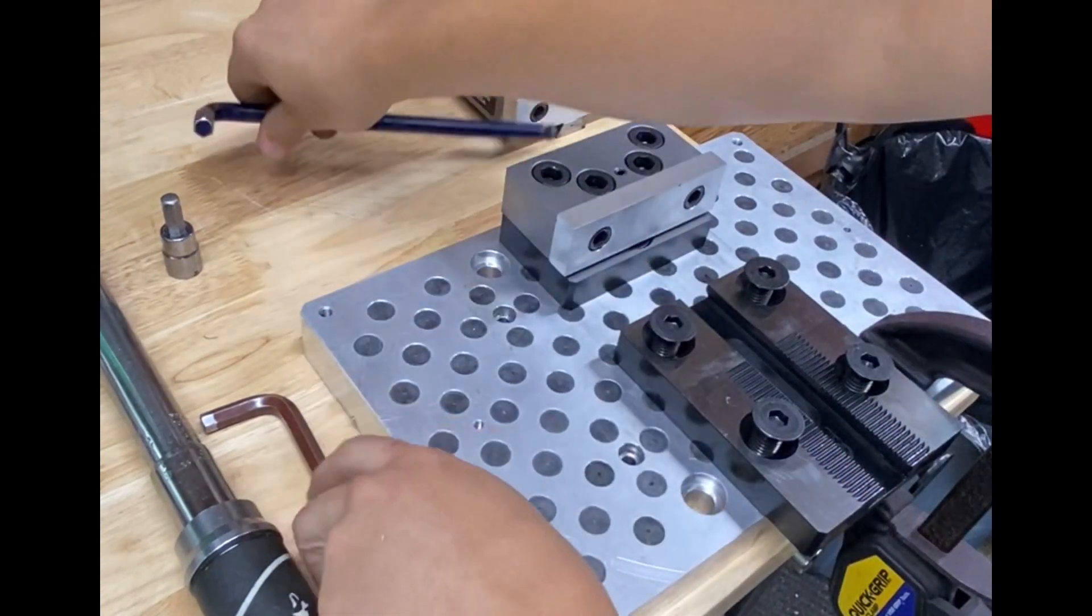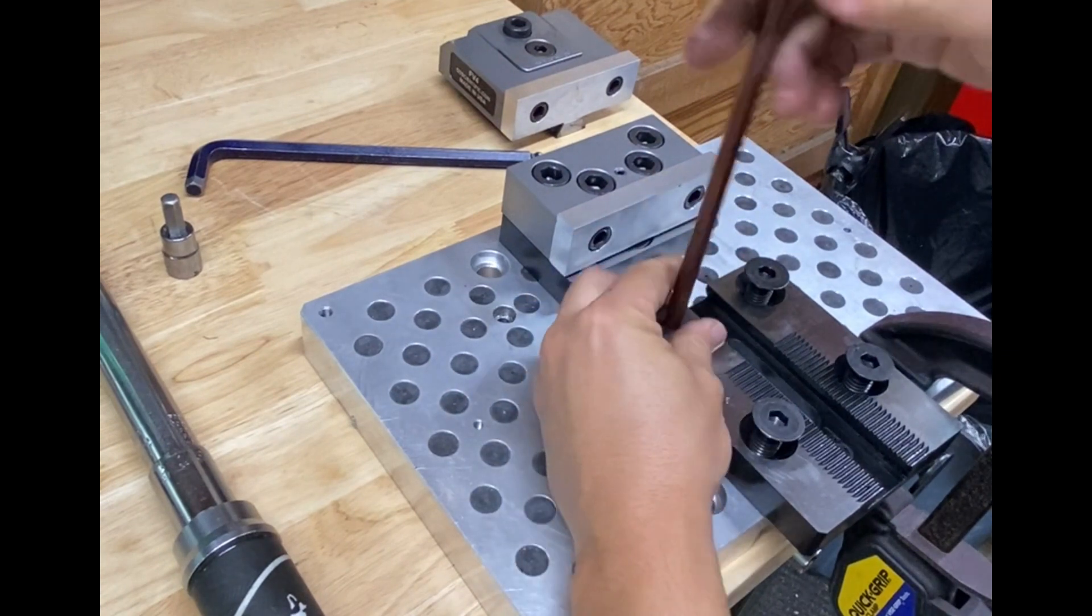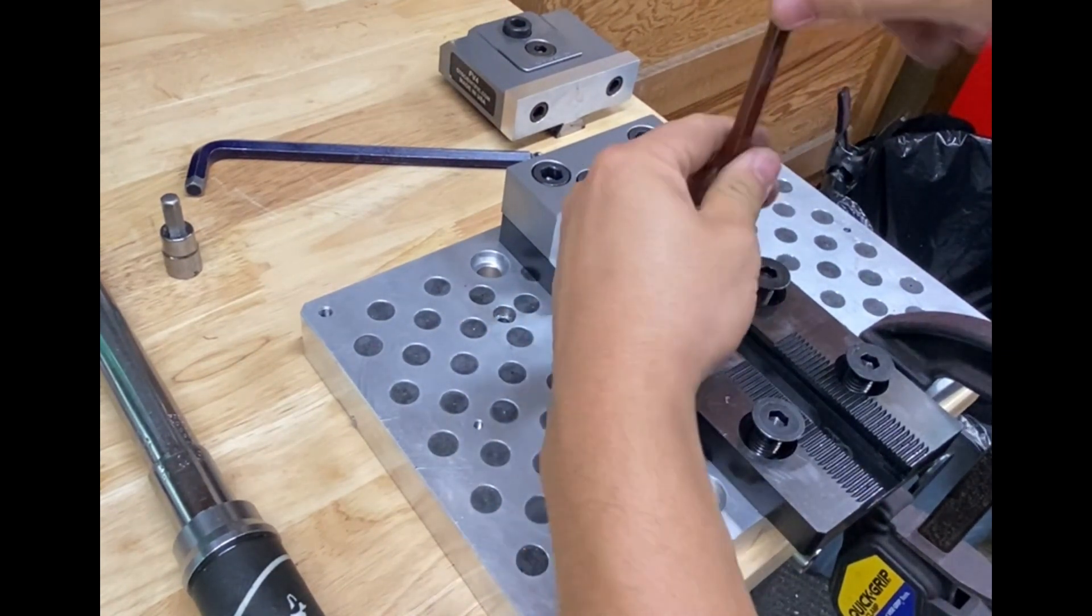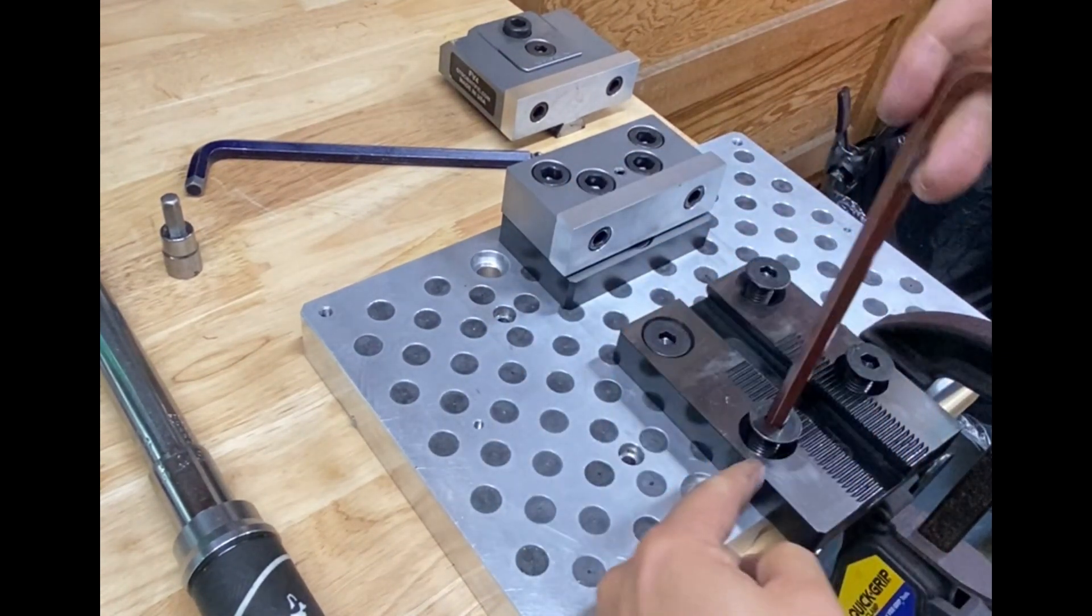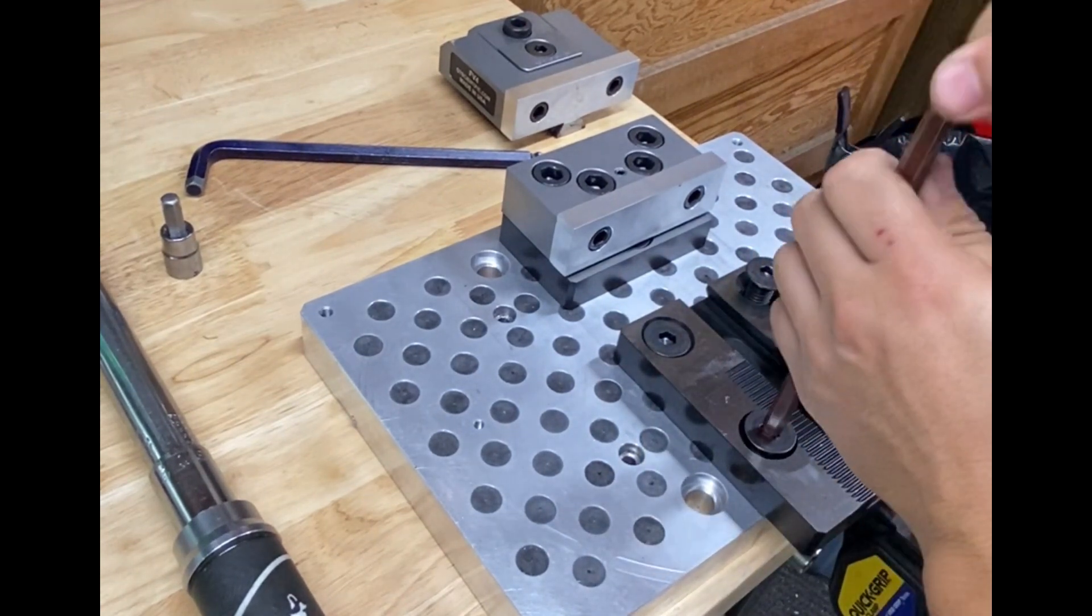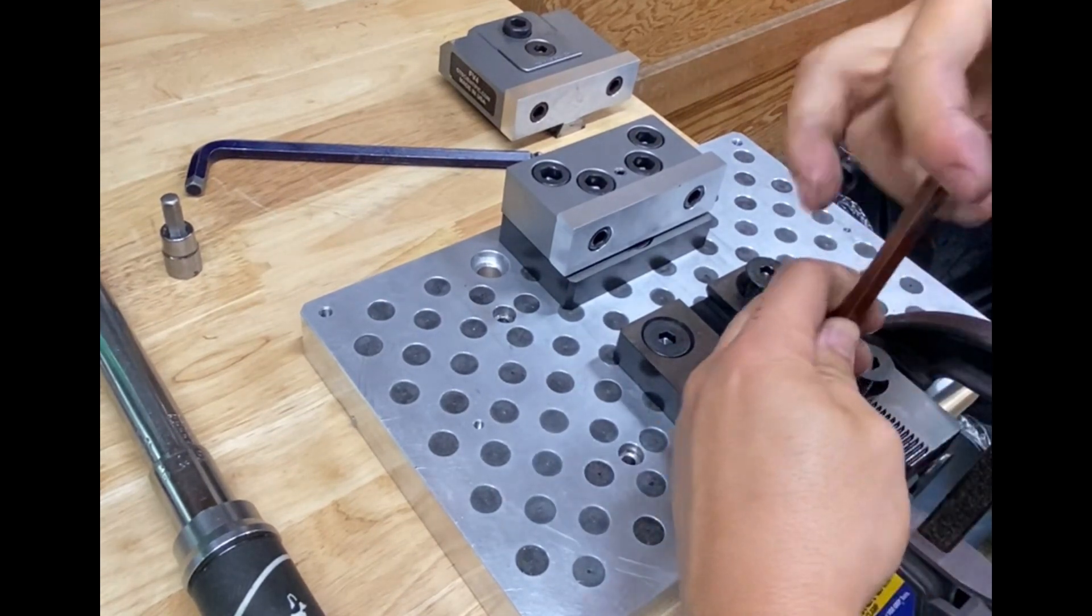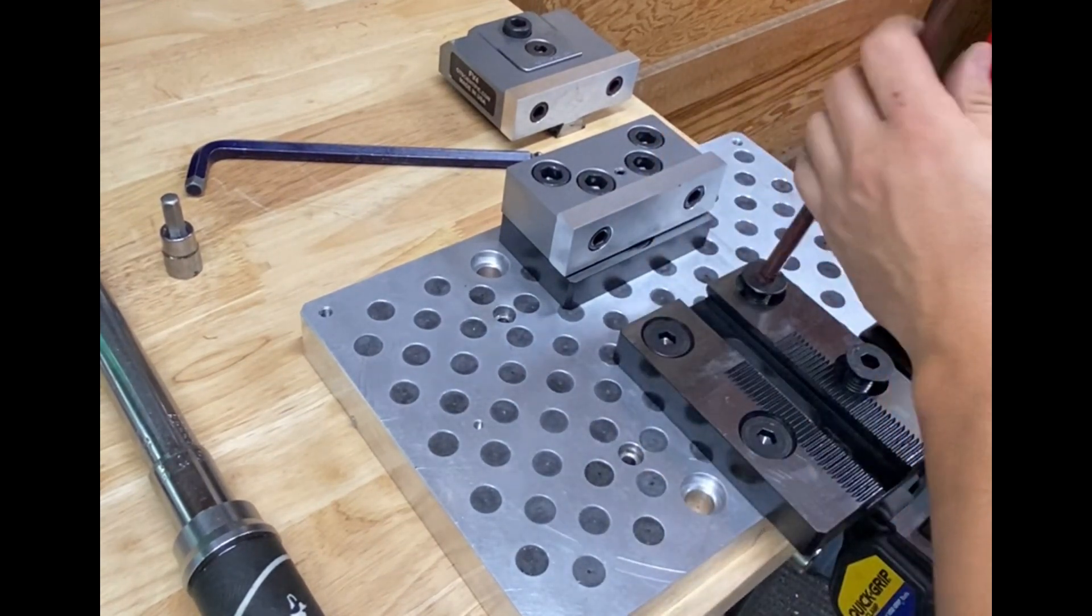Next you're going to put your flat head screws in. You don't really need these back screws, but if you have the room on your plate to install them, it's a better practice.